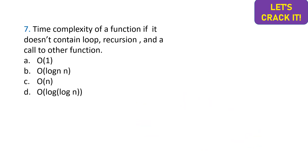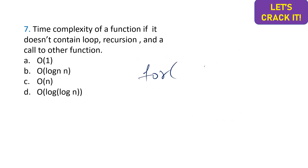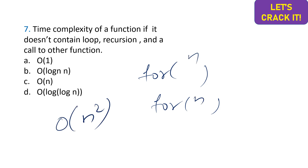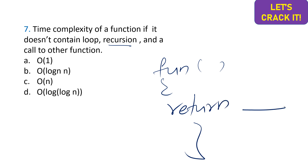The seventh question is about time complexity. If there is a for loop running n times, its time complexity is O(n). If there are two nested for loops each running n times, complexity is O(n²). However, in this question the function contains no loop, no recursion, and no call to other functions — only a return statement. Therefore the time complexity is directly O(1). Option A is the correct answer.